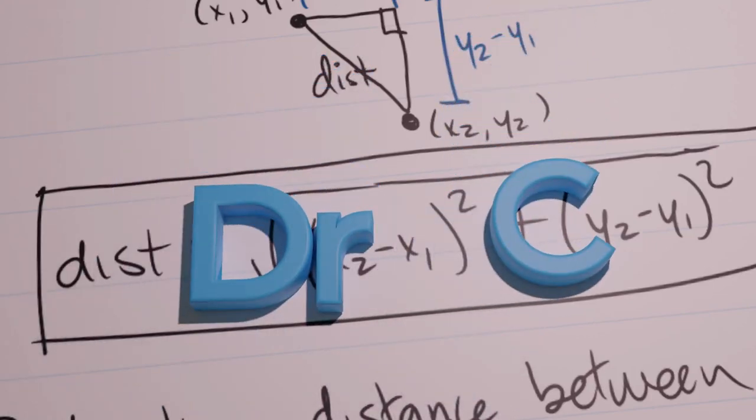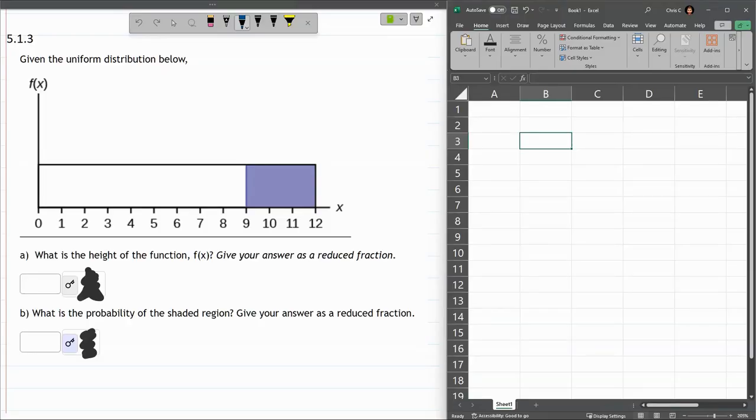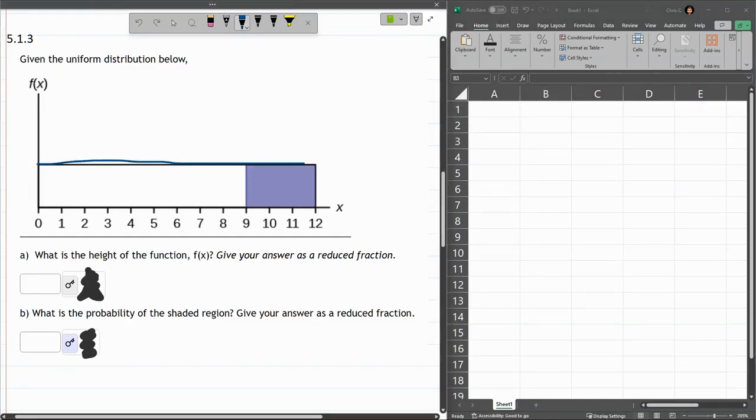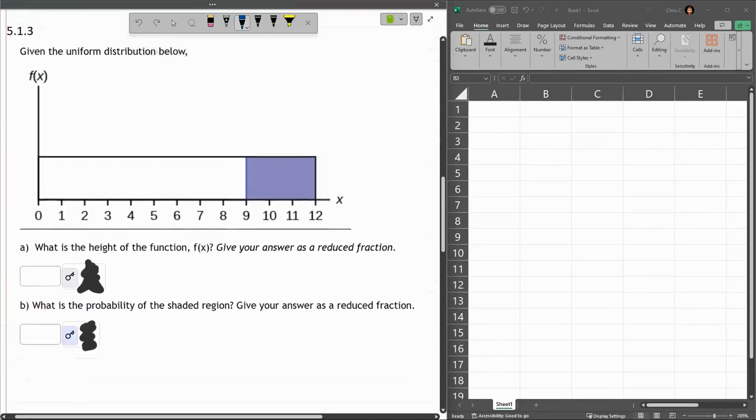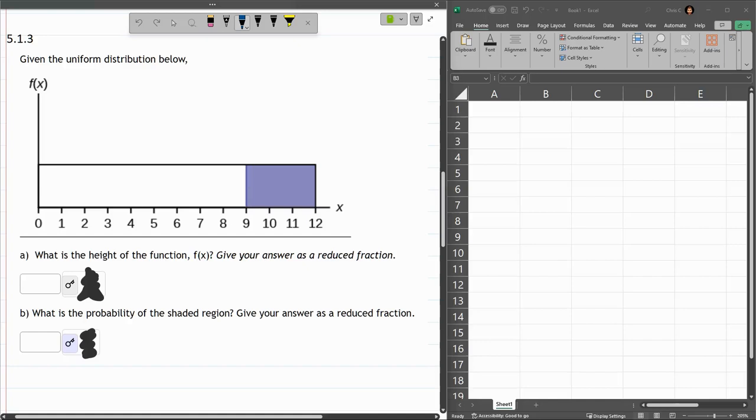In this question, we have a uniform distribution, and we have to compute the height of this. Uniform just means the height is constant the entire time. And remember, before I mentioned the area always has to equal 1, so the height is going to be 1 divided by the width.